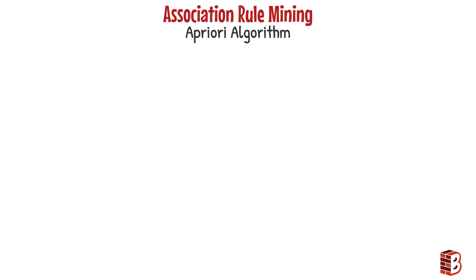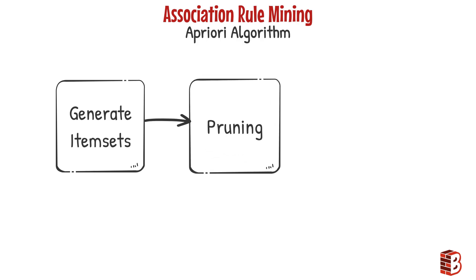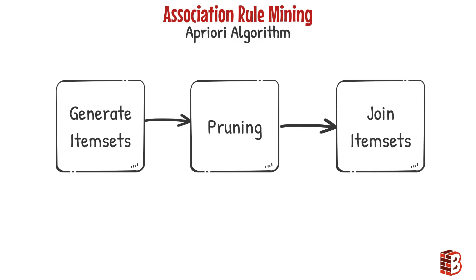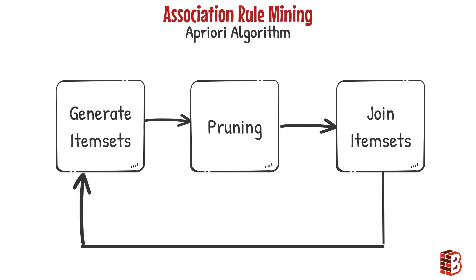The A Priori algorithm is composed of three main steps. The first step is to generate all the candidate item sets, and if a candidate item set doesn't meet the minimum required support condition, it will be considered infrequent and discarded — this is called pruning. Then the item sets will be joined together generating new item sets, and then we repeat. Let's apply the A Priori algorithm on the grocery store transactions dataset to understand more.